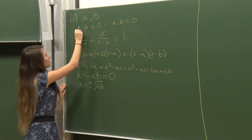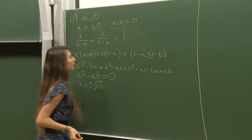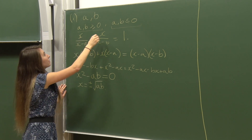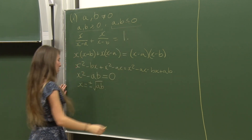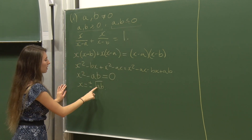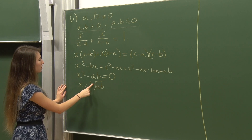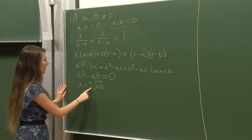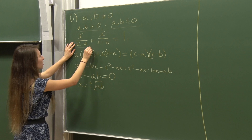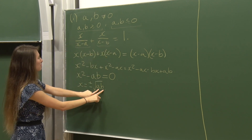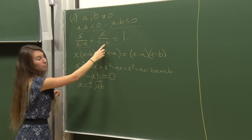Because a and b are either both non-negative or both non-positive — and they're non-zero — I have a positive number inside the square root, so I can take the square root. I get two distinct solutions from the ± sign. I should also check there's no division by zero, but that's fine because a and b are different, so √(ab) is never equal to a or b.